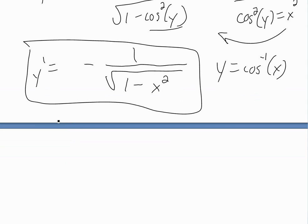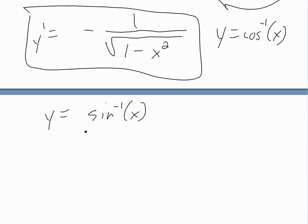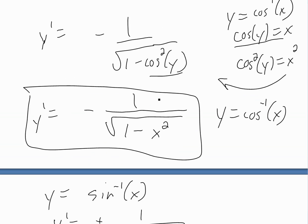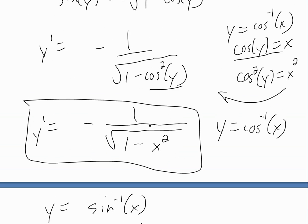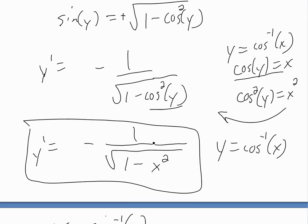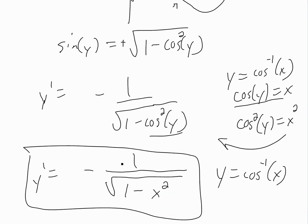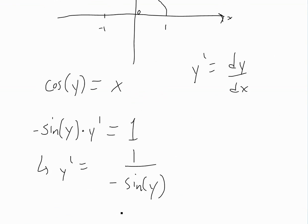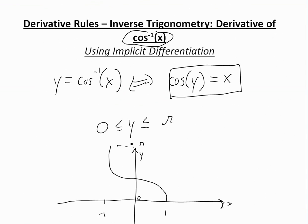This derivative is similar to the derivative of y equals inverse sine x, where that derivative is positive one over the square root of one minus x squared — so this one is just the negative version. So yeah, that's all for today. Hopefully you learned that you can use implicit differentiation to find all the inverse trig derivatives. Stay tuned for another Math Easy Solution.